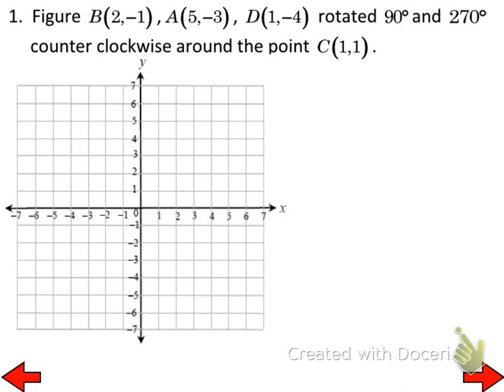When we started this process last week of attempting to rotate about points that are not at the origin, some of you have the ability to visualize what that looks like and have no problem with it. But many of you have a bit of a problem with that. So let me go ahead and plot B, A, and D and connect them together. We're supposed to rotate that about the point (1, 1), which happens to be right there.